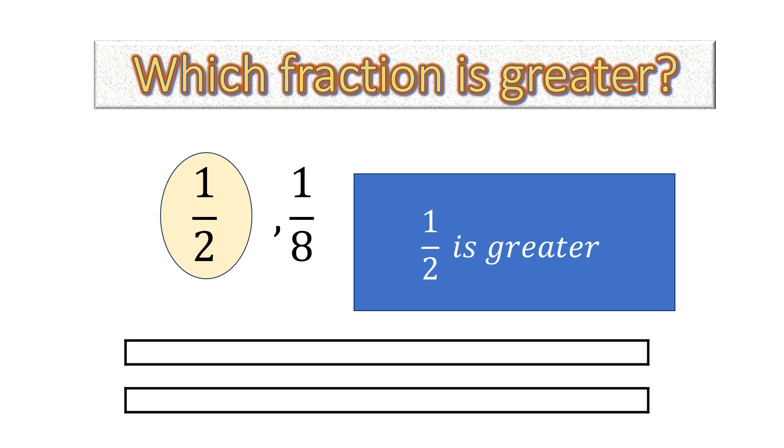Why so? Because suppose we have 2 bars of equal length. The bar here, we are dividing it into 8 equal parts. 1, 2, 3, 4, 5, 6, 7, 8. Now the total number of parts are 8 and we shade only one part. So this represents this fraction, that is 1 over 8.